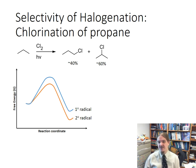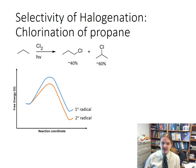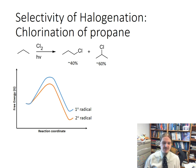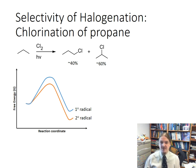Both variations start in the same place with chlorine and propane, but the primary radical is a little bit less stable than the secondary radical. If you were to carefully measure the rate of this reaction, you would find that the secondary radical also forms faster than the primary radical. Because it forms faster, more of it's going to happen. Part of the reason it forms faster is because it's slightly more stable.